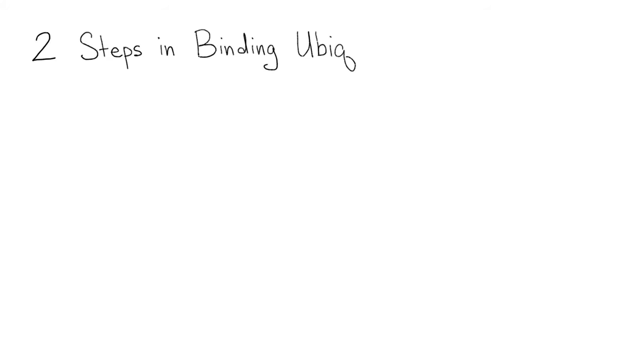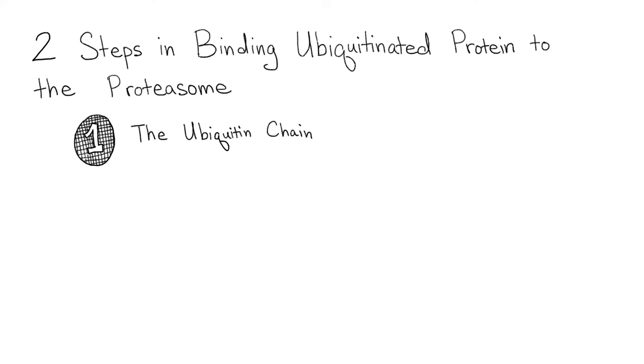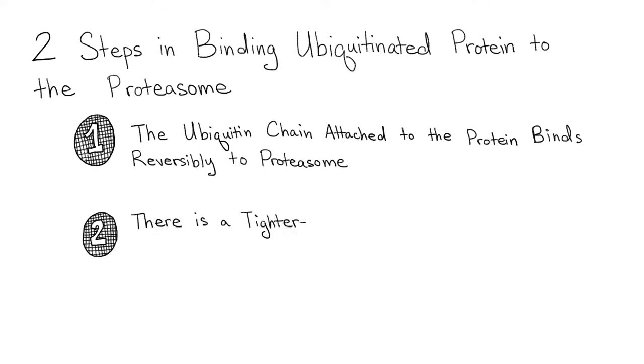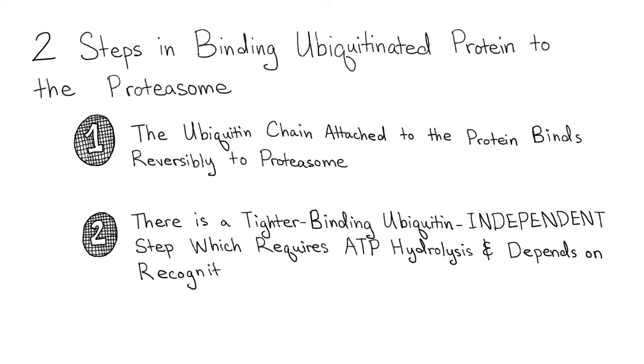There are two steps in the binding of a ubiquitinated protein to the proteasome. Initially, the ubiquitin chain attached to the protein in question binds reversibly to the proteasome. Then, there is a tighter binding ubiquitin-independent step which requires ATP hydrolysis and depends on recognition of a loosely folded region by the proteasome.